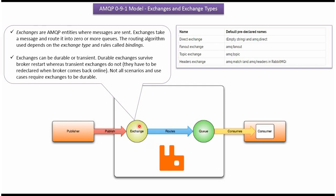The routing algorithm used in exchanges depends on the Exchange type and the rules called bindings. Here you can see the different Exchange Types: Direct Exchange, Fanout Exchange, Topic Exchange, and Headers Exchange.